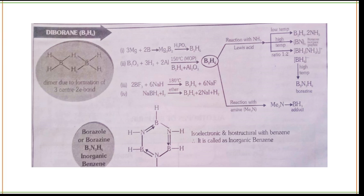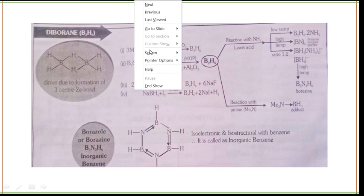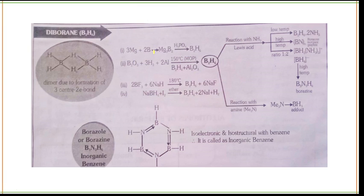Next is diborane, with formula B₂H₆. The preparation methods for B₂H₆ include: first, reacting two moles of boron with three moles of magnesium to form Mg₃B₂, which then reacts with H₃PO₄ to give B₂H₆. There are also second, third, and fourth preparation reactions that you need to learn.